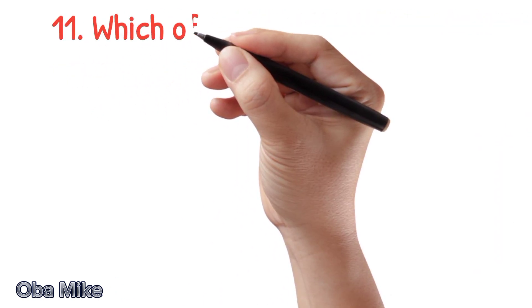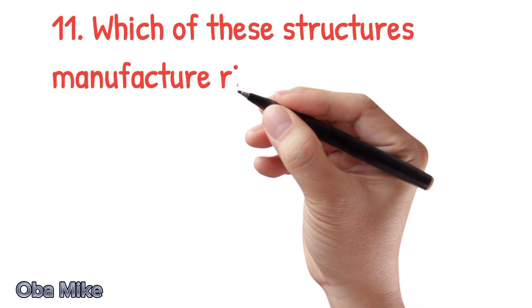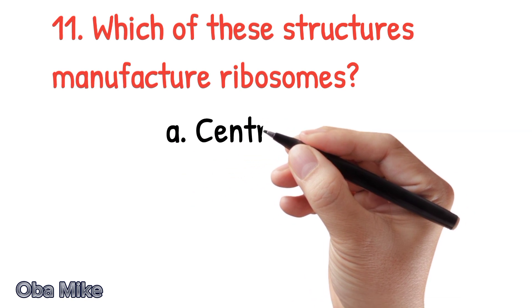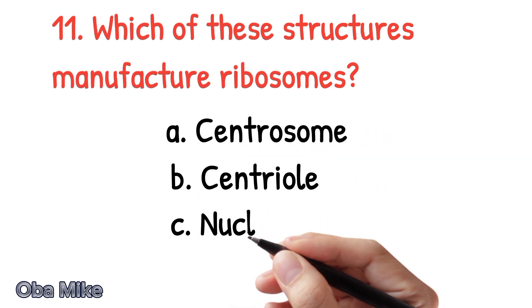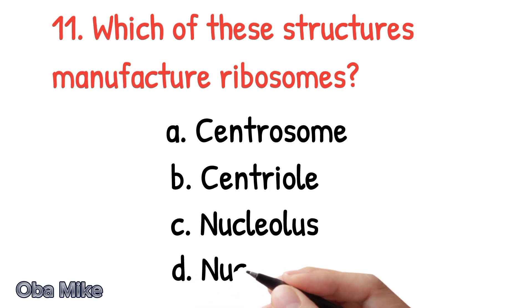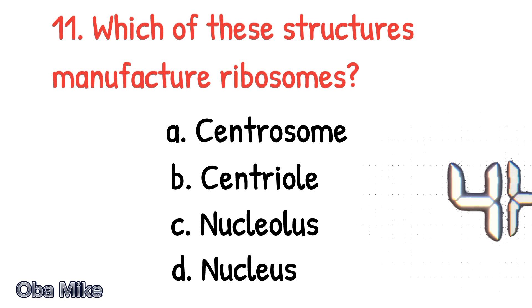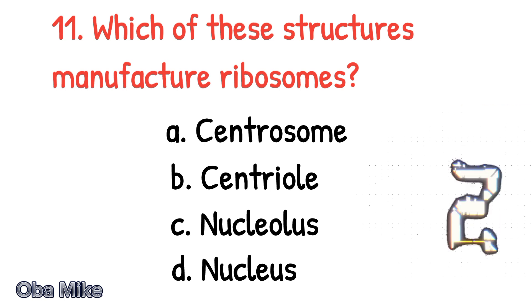Number 11. Which of these structures manufacture ribosomes? A. Centrosome, B. Centriole, C. Nucleolus, D. Nucleus. The correct answer is C. Nucleolus.